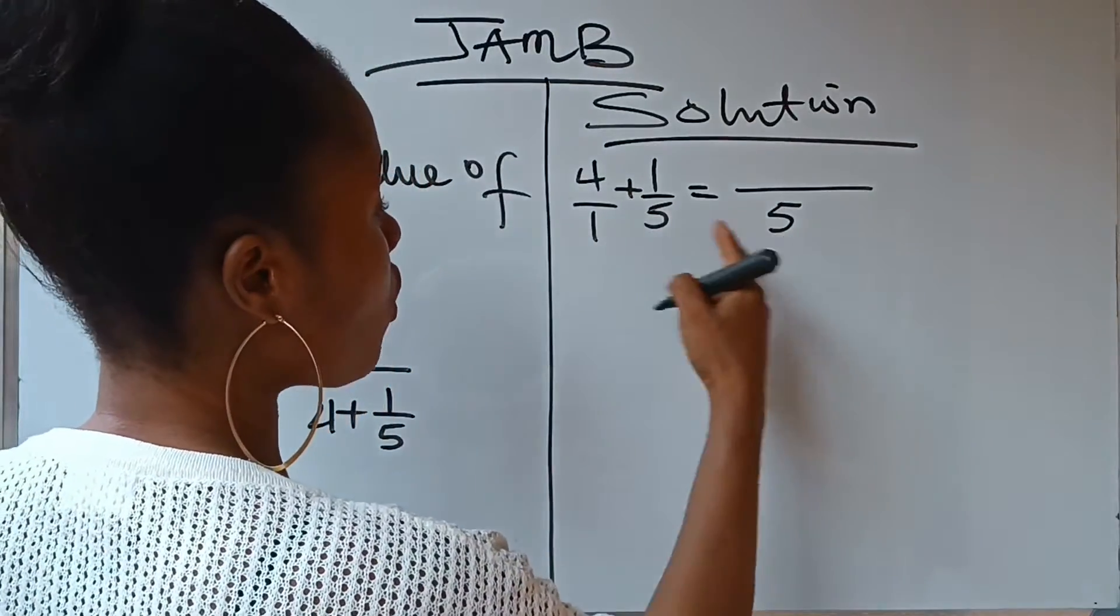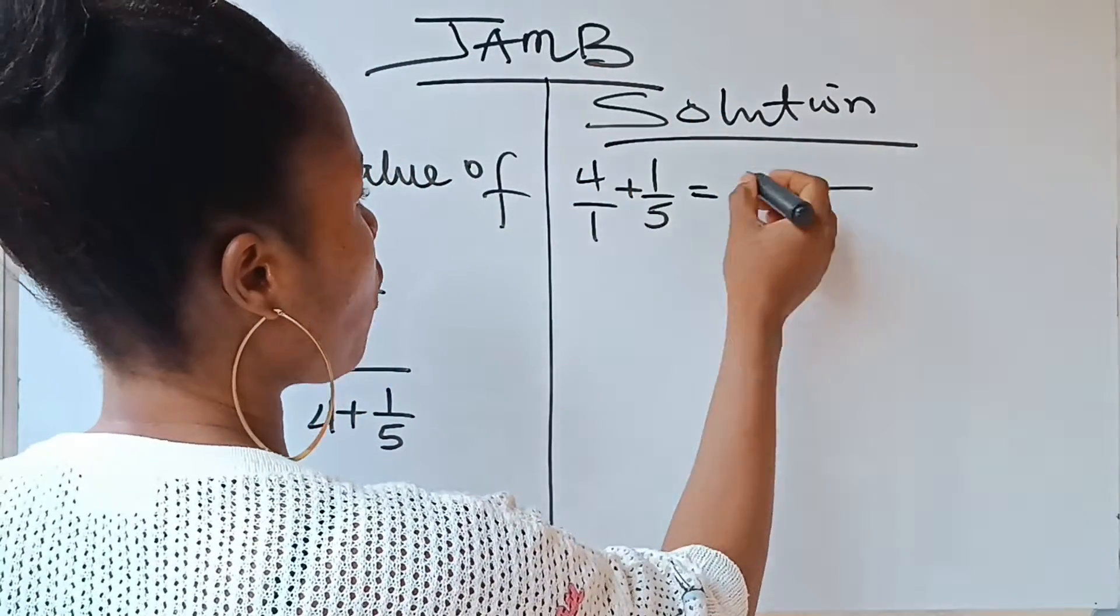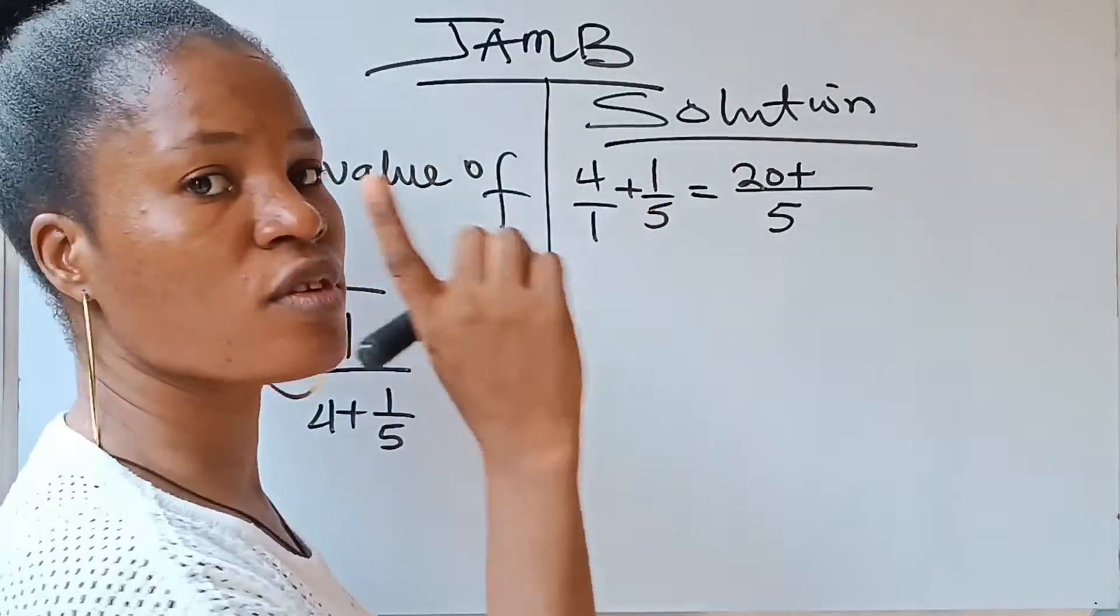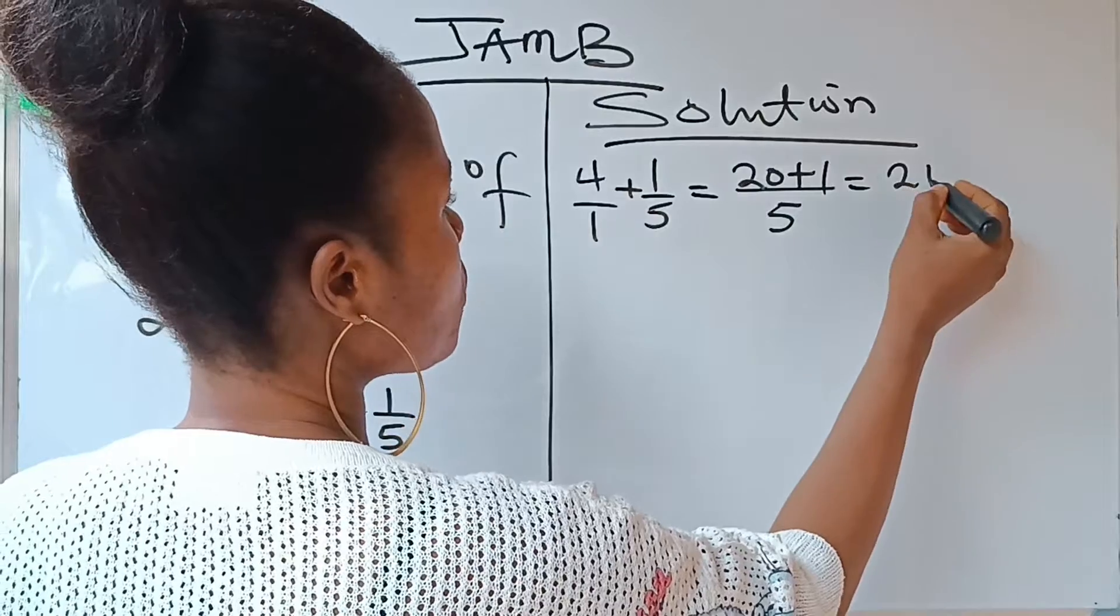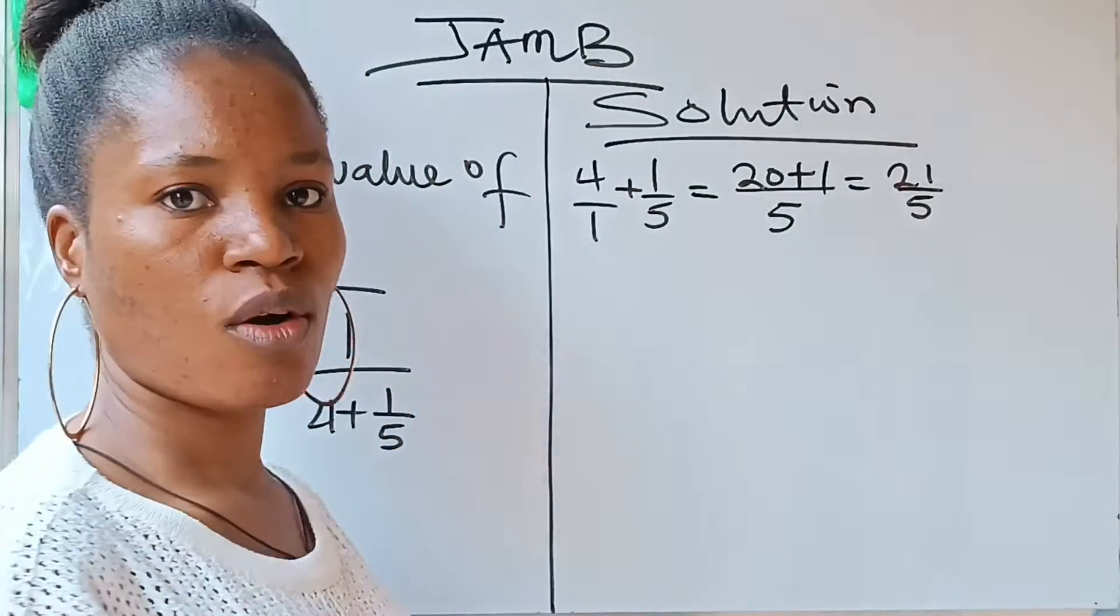1 times 1 divided by 5 is 5. 5 times 4 is 20 plus, 5 divided by 5 is 1, 1 times 1 is 1. So for this one you are going to have 21 over 5, 21 over 5.